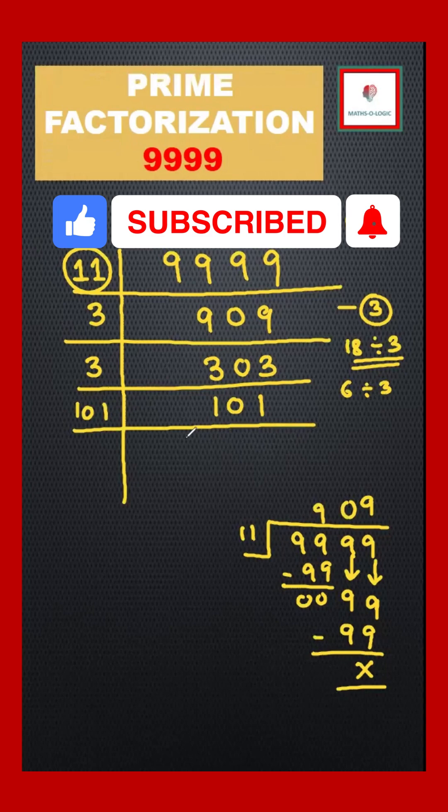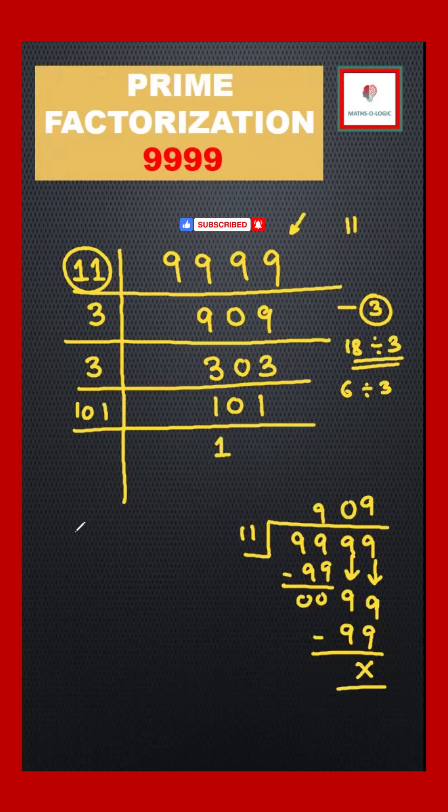101 itself is a prime number, so we're done. The prime factorization of 9999 is 11 × 3 × 3 × 101. Thank you, see ya, bye bye!